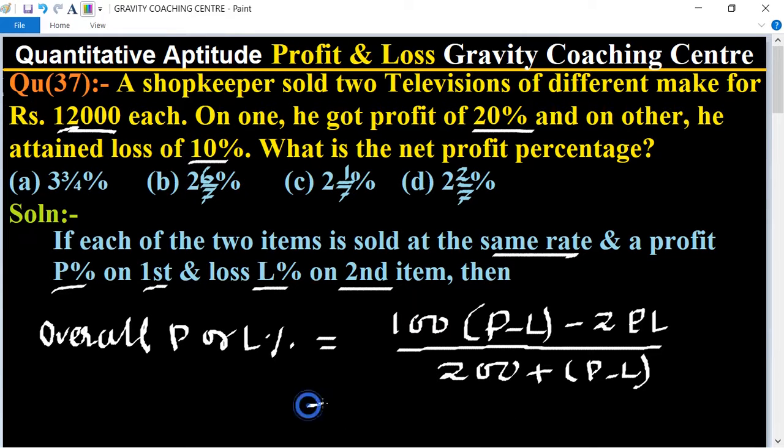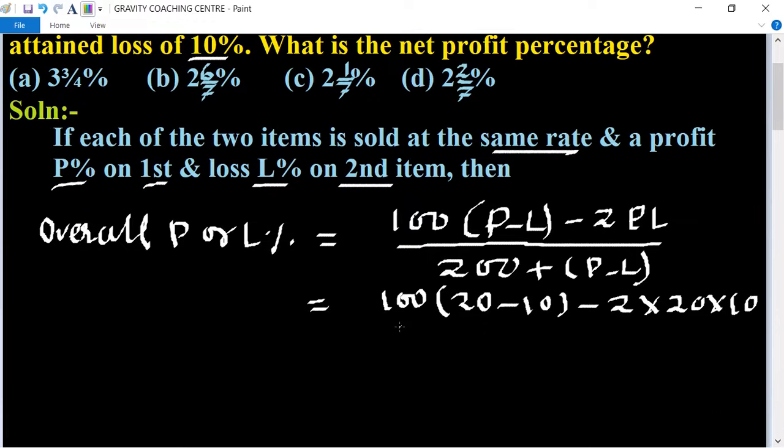Equals 100, where P is the profit percent, so 20, and loss percent is 10. Then 100 times (20 minus 10) minus 2 times 20 times 10, upon 200 plus (20 minus 10).